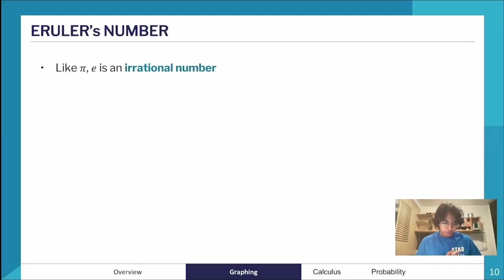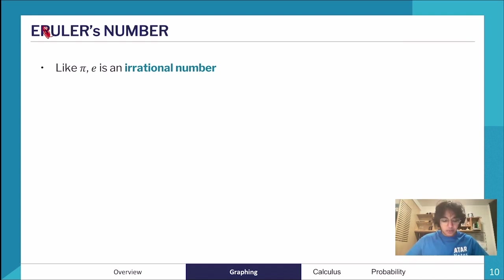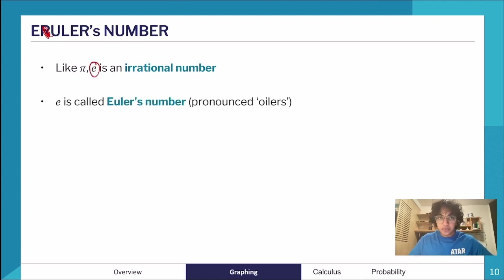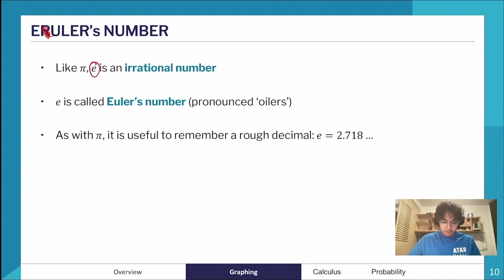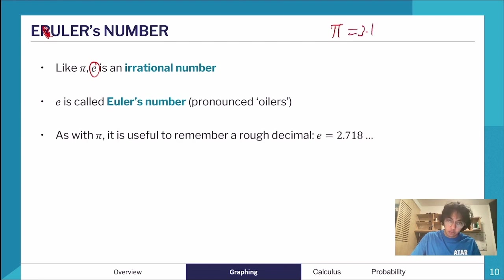Let's start with Euler's number. It's pronounced 'Euler' — E-U-L-E-R — but what it refers to is just e. You may have seen it before. It's like pi in the sense that it's an irrational number that's constantly repeating. It's a good idea to remember it to a rough decimal point, like how we remember pi is about 3.14.